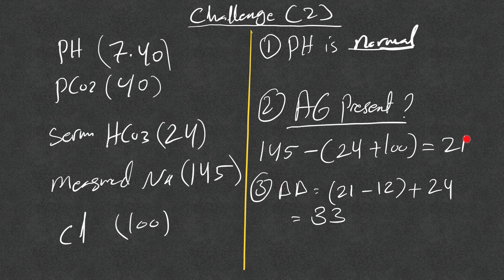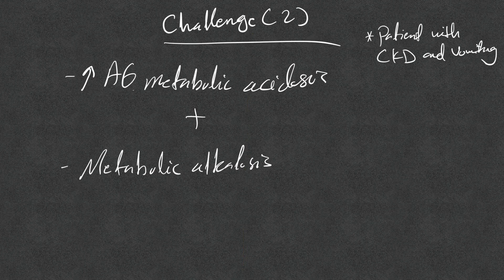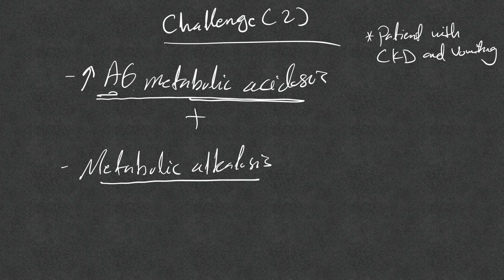Because the anion gap is high, we go to the delta-delta. We only use the delta-delta if the anion gap is high — not if it's normal or low. The delta-delta is 21 (current anion gap) minus 12 (normal anion gap) plus serum bicarb 24, which equals 33. That is higher than the normal bicarb range of 22 to 26, indicating metabolic alkalosis. This patient had CKD and vomiting — the high anion gap metabolic acidosis is explained by CKD and the metabolic alkalosis by vomiting.